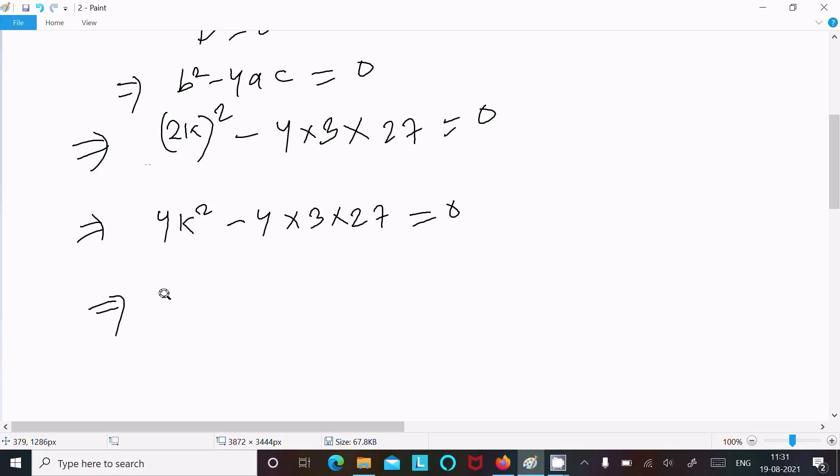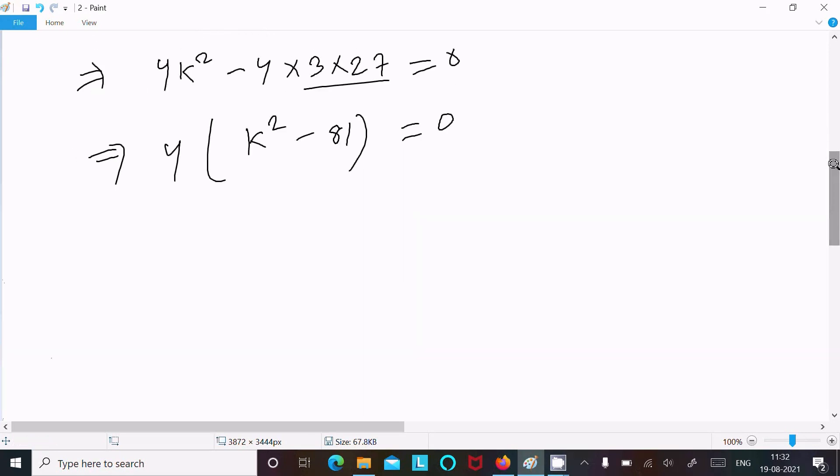Here 4 is common, so taking 4 common: k² and 27 × 3 = 81. Now multiply with this will go on division.